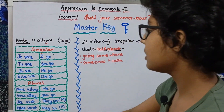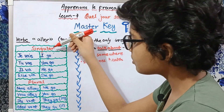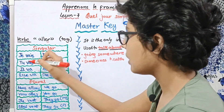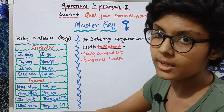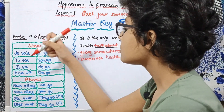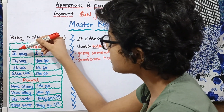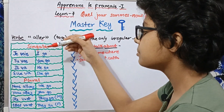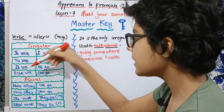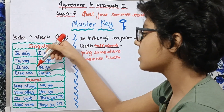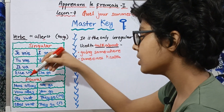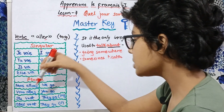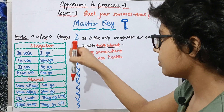These conjugations are divided into singular and plural according to their subject pronouns. For the singular: je vais means 'I go,' tu vas means 'you go,' il va means 'he goes,' and elle va means 'she goes.'